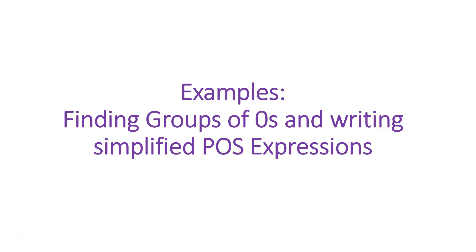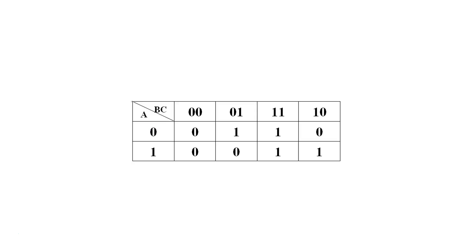In today's video, we'll look at four examples where we'll try to group zeros in a Karnaugh map to find the simplified product of sums of some expression.